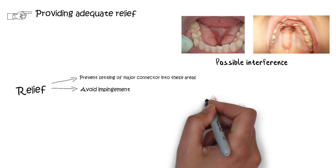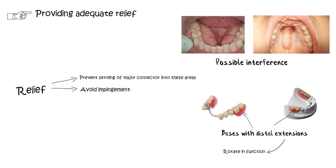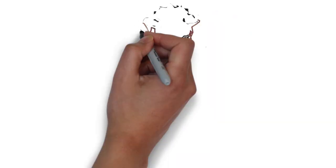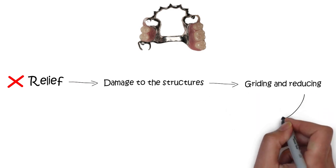When designing major connectors for bases with distal extensions, such as Kennedy Class 1 and Class 2, adequate relief should be provided. Bases with distal extensions have a tendency to rotate in function and can cause damage to underlying tissues. Therefore, relief must be provided below the major connector or the denture must be placed to avoid tissue impingement. Adjusting and grinding after fabrication to provide relief can seriously weaken the major connector's rigidity and strength.